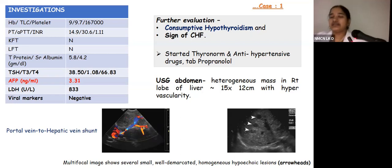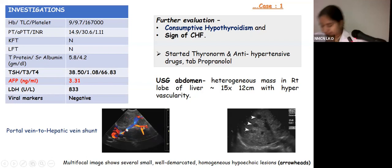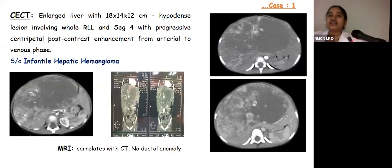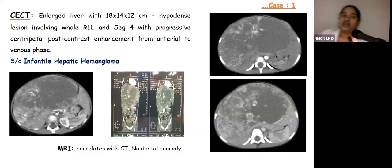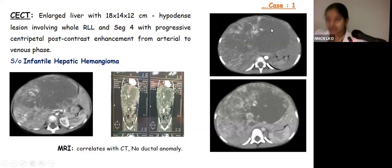Pediatric endocrinology was consulted and she was started on thyroxine, antihypertensives, and propranolol in view of congestive heart failure symptoms. Ultrasound abdomen revealed a heterogeneous mass occupying the entire right lobe, 15×12 cm, with hypervascularity. Doppler showed a portal vein to hepatic vein shunt. CT-angio showed an enlarged liver of 18×18×14 cm, a hypodense mass occupying the entire right lobe and involving segment 4, with progressive centripetal contrast enhancement — features suggestive of infantile hepatic hemangioma. Small lesions were also appreciated on the left side.